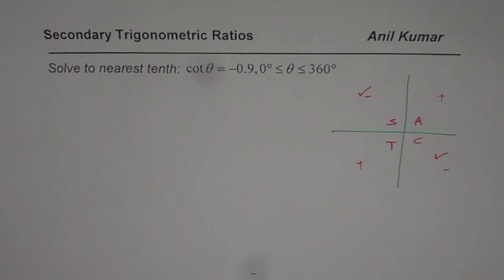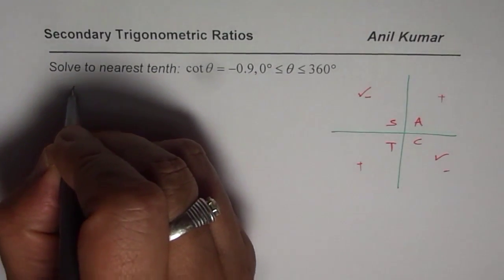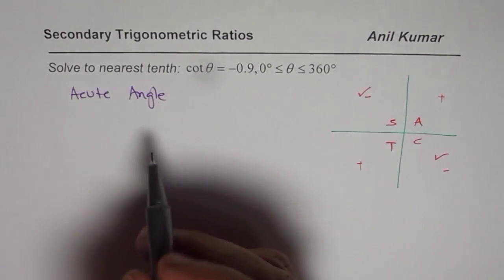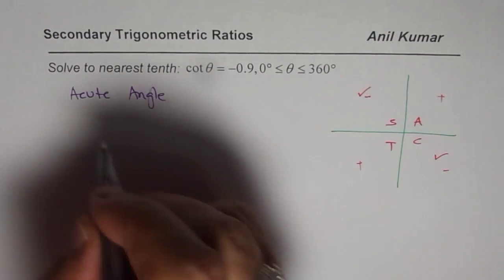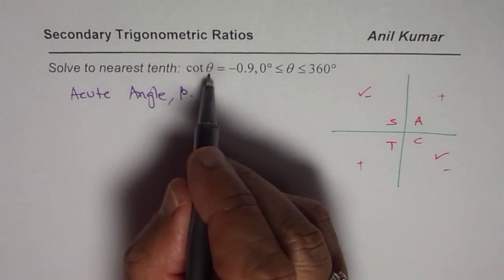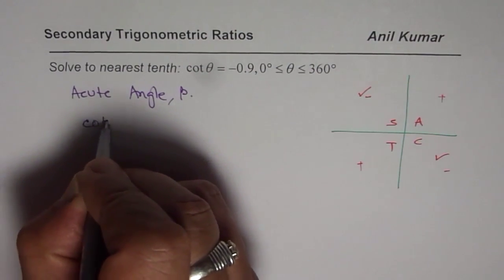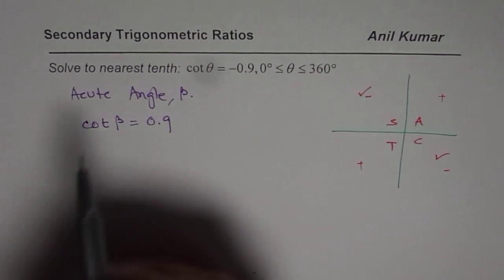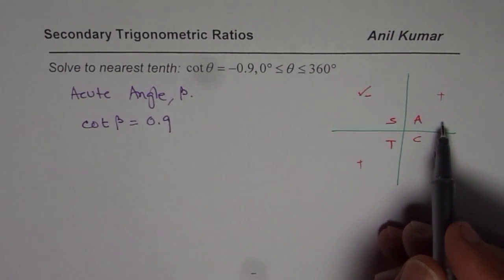So we are looking for two solutions. Now, the question is, how do you get two solutions? The method is: first we have already found that we are looking for two solutions. We need to find the acute angle. At times we say this angle to be the angle which we find by dropping this sign and just calculate. Let us say the acute angle is β for us. We will change the equation. Instead of cot θ equals to minus 0.9, we will solve for cot β equals to 0.9. You see, I have dropped the sign. I am looking for the acute angle. Acute angle is less than 90 degrees. It has to be positive.